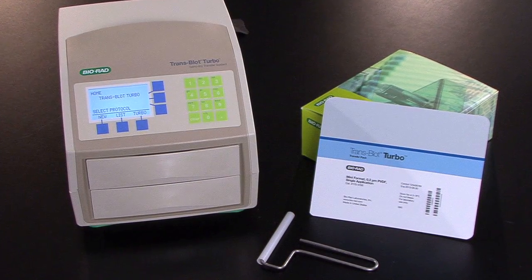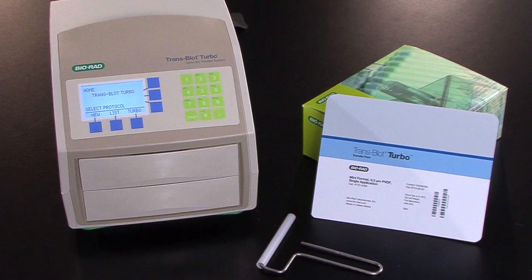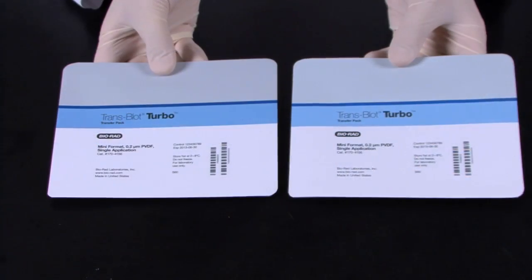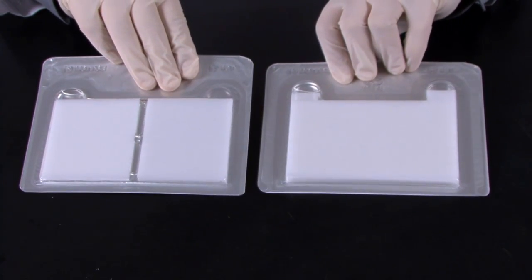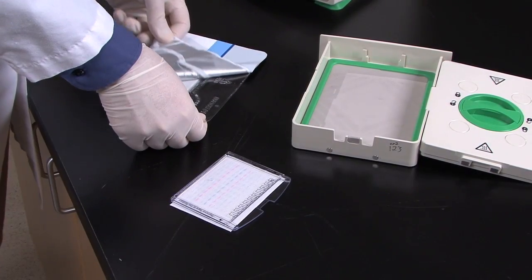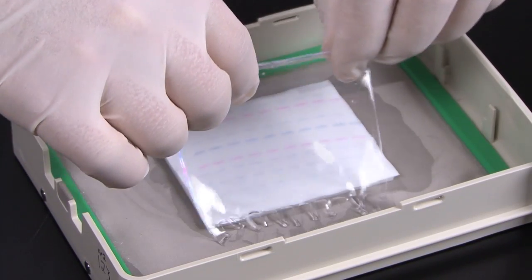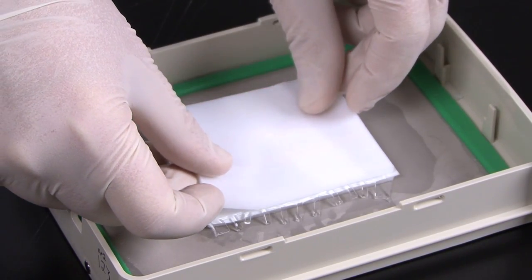With the Trans-Blot Turbo system, these time-consuming and frustrating steps are no longer necessary. Your gel is ready for transfer immediately after electrophoresis, and all the components in a Turbo transfer pack are pre-cut and pre-saturated with buffer and ready to use. All you need to do is peel open the top foil and assemble your sandwich in the transfer cassette.